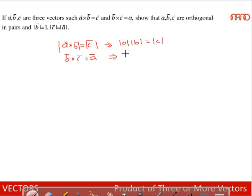And modulus of B cross C is modulus of A, so mod B mod C is equal to mod A. Dividing these two equations one by the other, mod A by mod C is equal to mod C by mod A, or mod A by mod C whole square is 1, or mod A is equal to mod C.